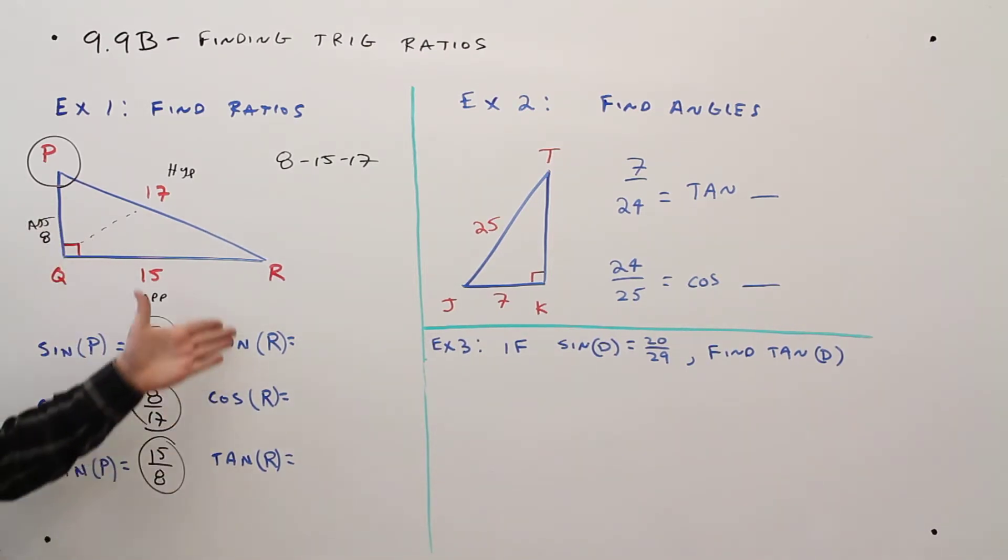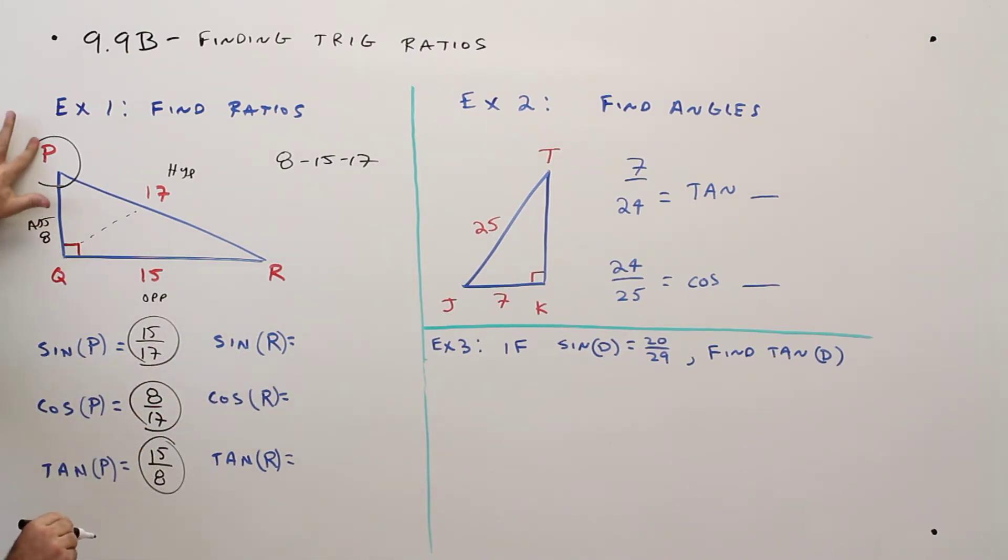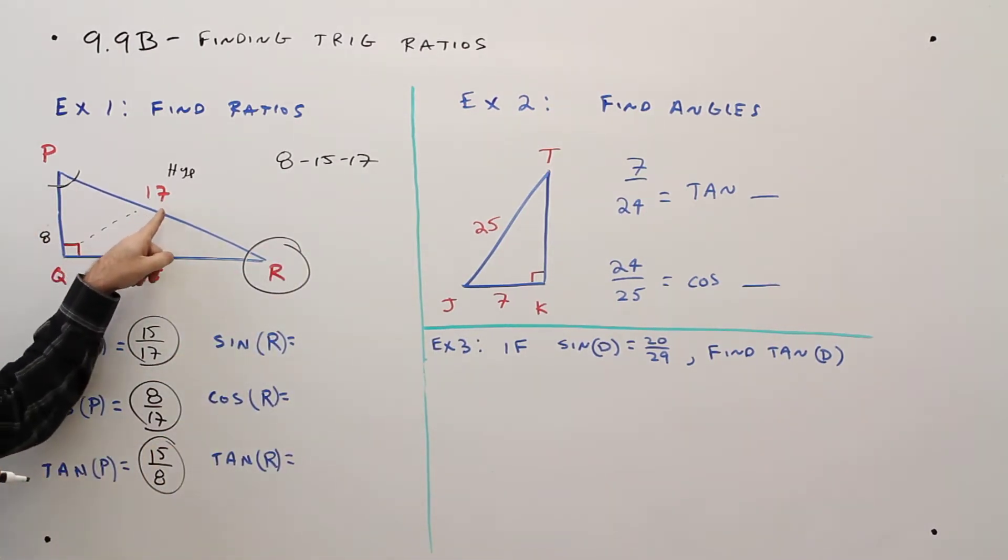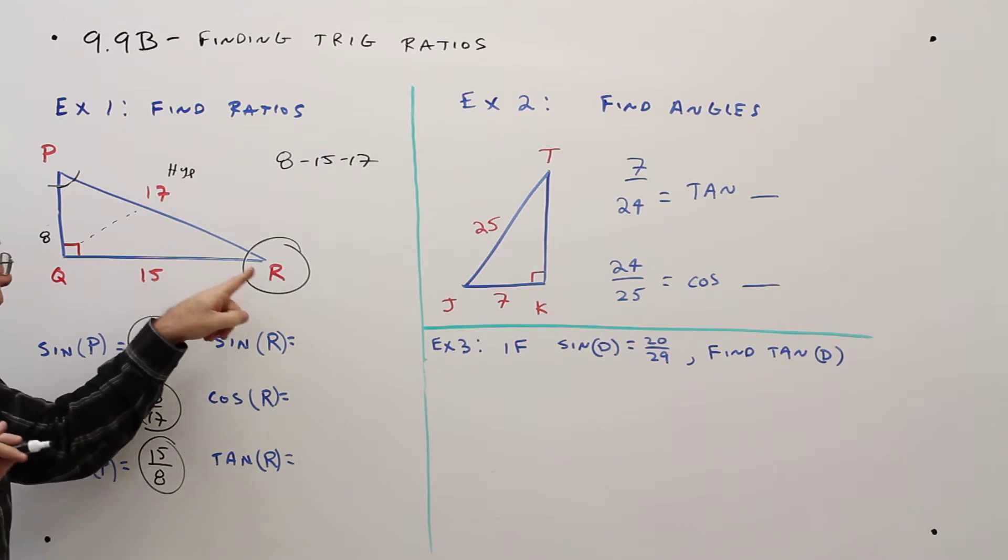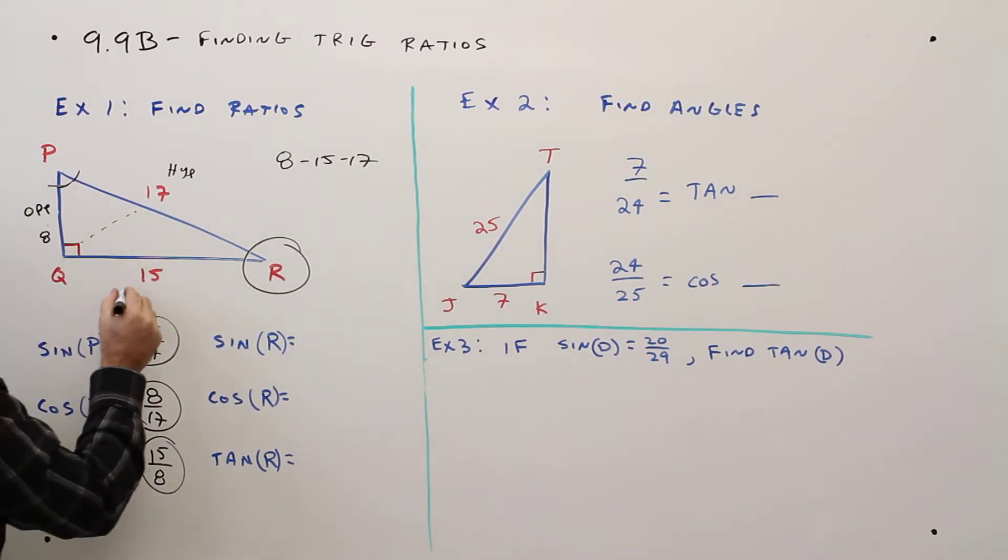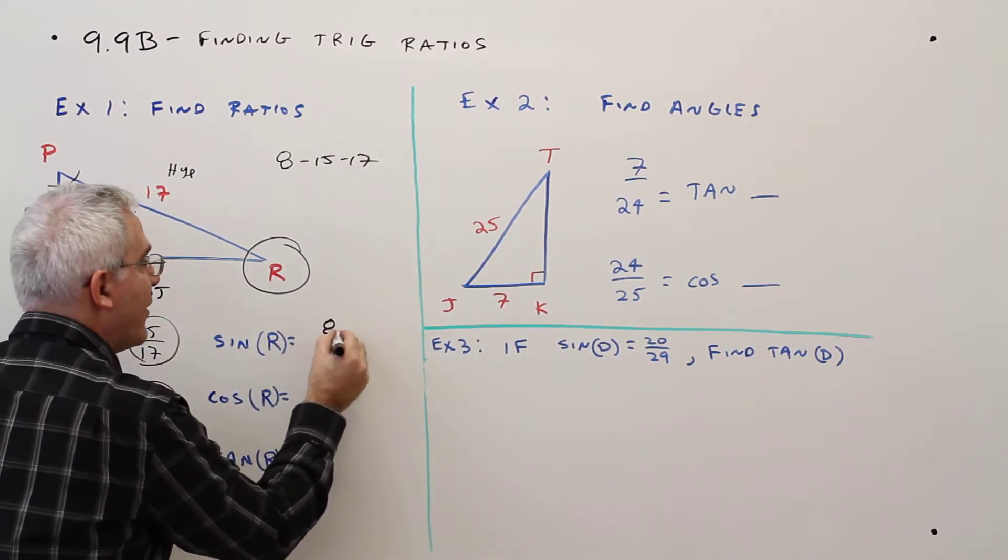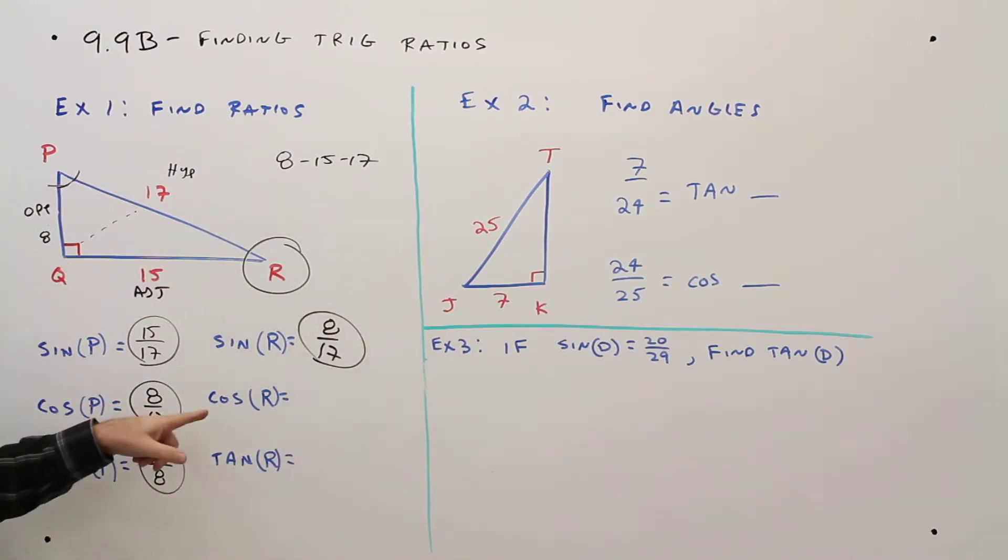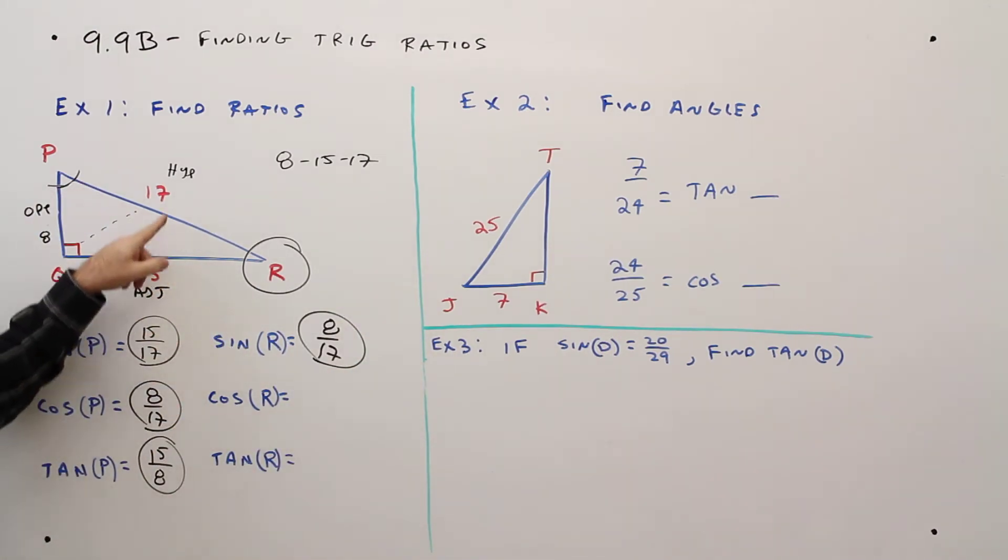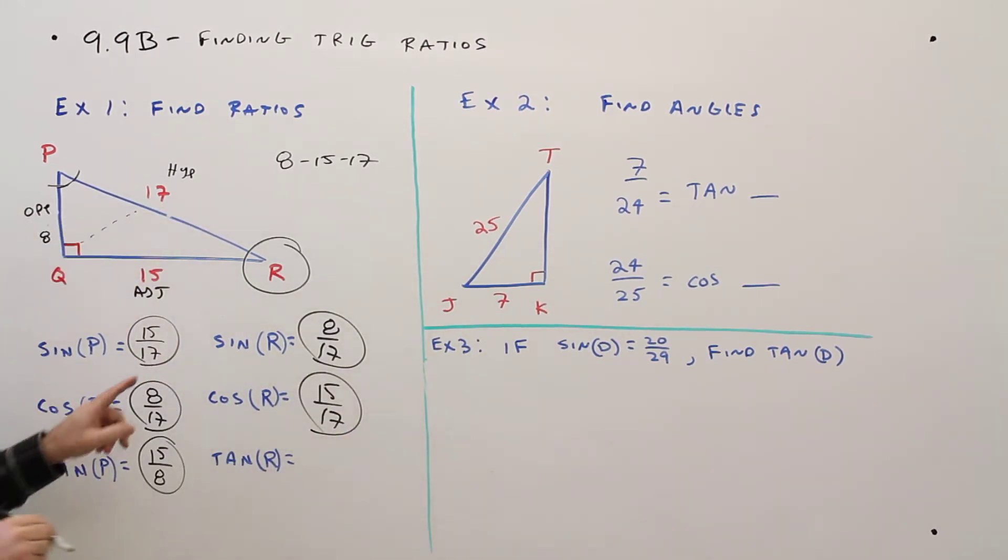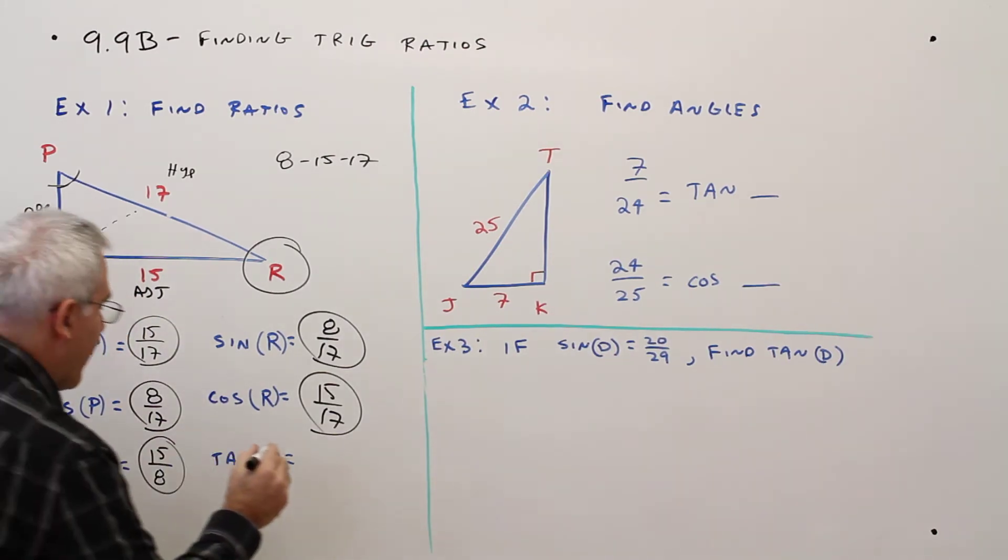Okay, now these talk about angle R, so I will now make angle R be my reference angle. Again, the hypotenuse is always opposite the right angle, that doesn't change. But now this side is the opposite, and this side is the adjacent. So for the sine of angle R, opposite over hypotenuse, 8 over 17. Cosine of angle R, adjacent over hypotenuse, 15 over 17. And tangent of angle R, opposite over adjacent, 8 over 15.